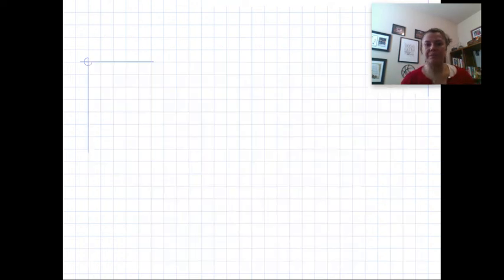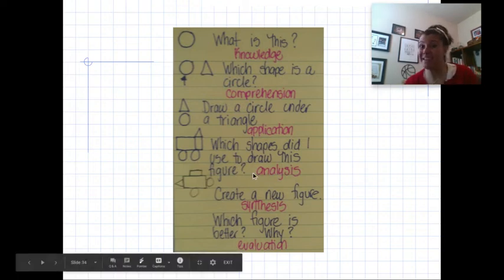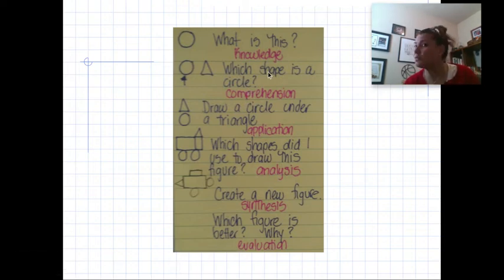I have one more example here, very basic. The first level of Bloom's taxonomy, which is knowledge. What is this? It's a circle. I'm identifying, really easy. This is why we love multiple choice questions that teachers put together, because multiple choice questions are usually right about in these levels. We oftentimes don't love those project-based learning types of projects because they're in the upper levels. It makes you have to do a lot more. Comprehension: which shape is a circle? Picking which one. Application: draw a circle under a triangle, having to know those concepts in order to do that.